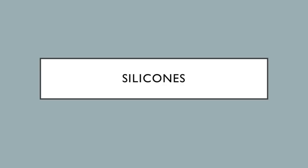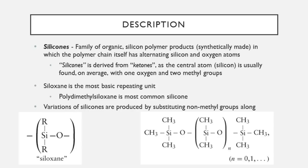The next polymers are silicones, which have a rich history in biomedical devices. Silicones aren't a single polymer but a family of organic silicon-based polymers with alternating silicon and oxygen atoms in the backbone chain. The name silicone is derived from ketones — on average one repeating unit has one silicon atom, one oxygen atom, and two methyl groups, just like a ketone. Note: the element is silicon; the polymer is silicone. This ketone-like repeating unit is called siloxane, the most basic unit in the silicone family. The most common silicone polymer is polydimethylsiloxane (PDMS).